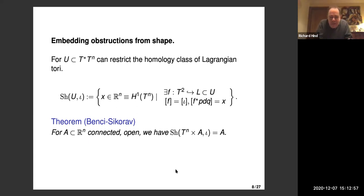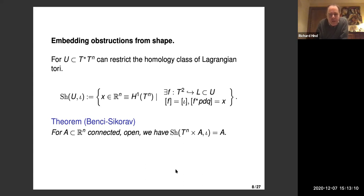We've computed a new sort of capacity that takes values in open sets — maybe it leads to some embedding obstructions. There is some motivation for that in the literature. There's another version of shape: a shape for an open subset of the cotangent bundle of a torus.